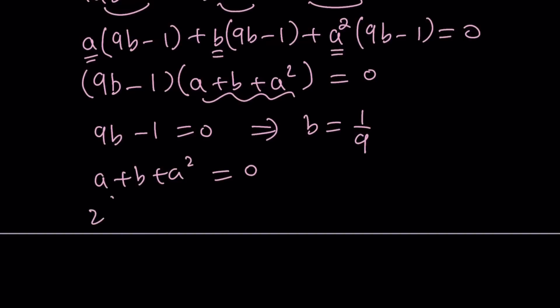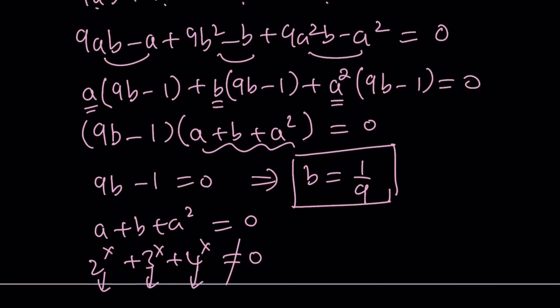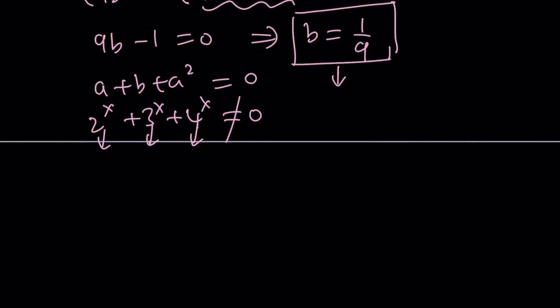So let's save that for now and look at the second factor a plus b plus a squared equals 0. Now notice that a is 2 to the x, b is 3 to the x and a squared is 4 to the x and as you know this can never be 0. So the second factor can never be 0 which means the only solution we get from here. Why can't this be 0? Because 2 to the x, 3 to the x and 4 to the x are always positive at least for real values of x. So b equals 1 ninth is the only result we get from here and what is b?